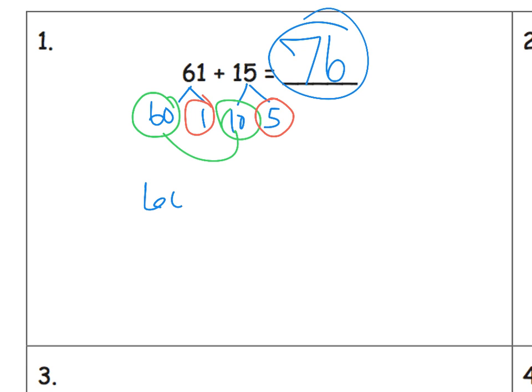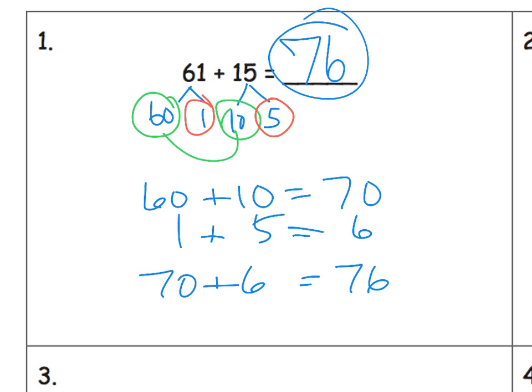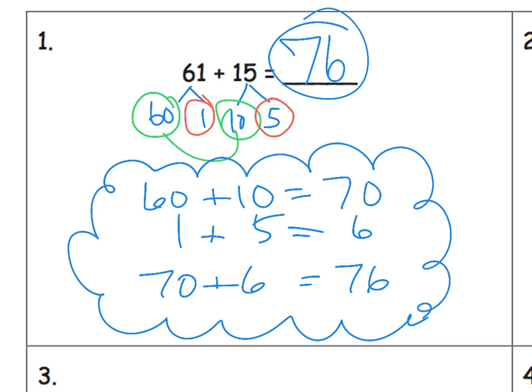We may ask our students to write it down like this: 60 plus 10 is 70, 1 plus 5 equals 6, and then 70 plus 6 is 76. This, though, is really just writing down the mental math that eventually we want our students to be doing. So parents and teachers, don't freak out about how much writing this is. This is just a way to notate on paper what's going on in the student's brain. Eventually, we don't want them to write that stuff down at all.